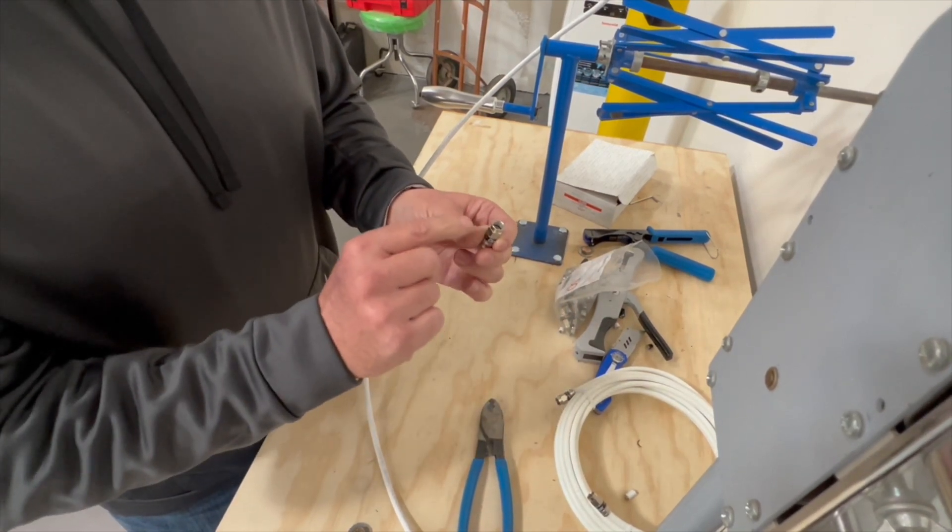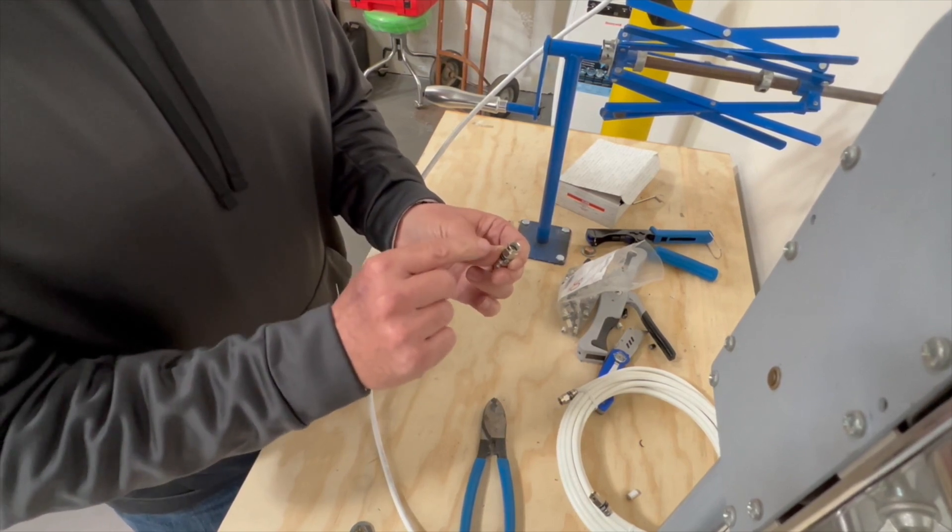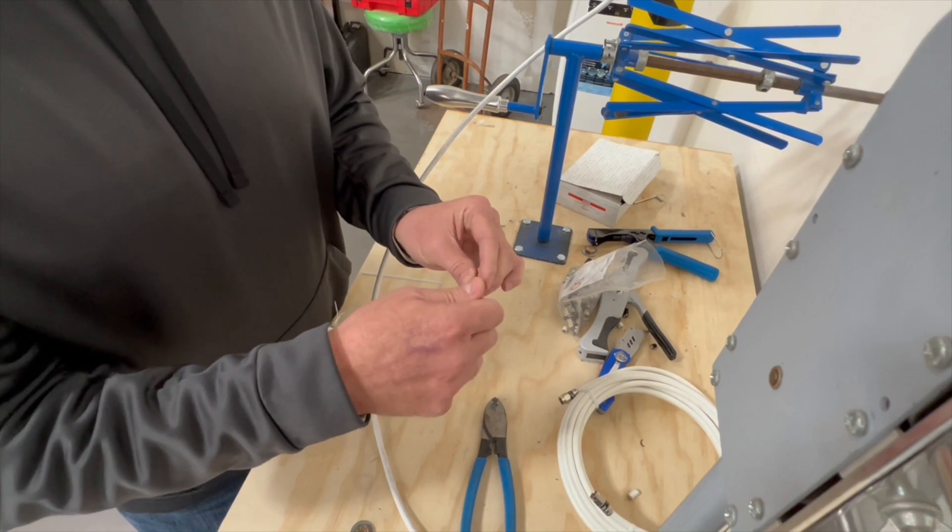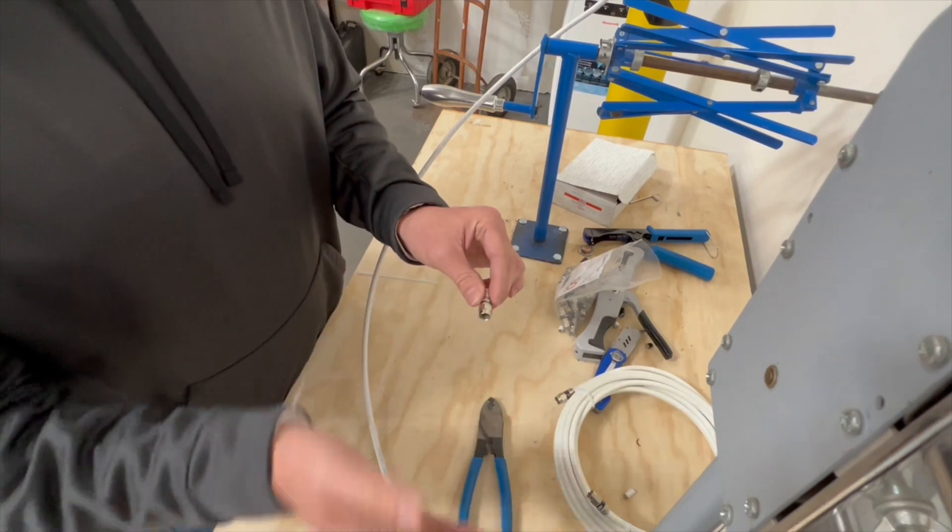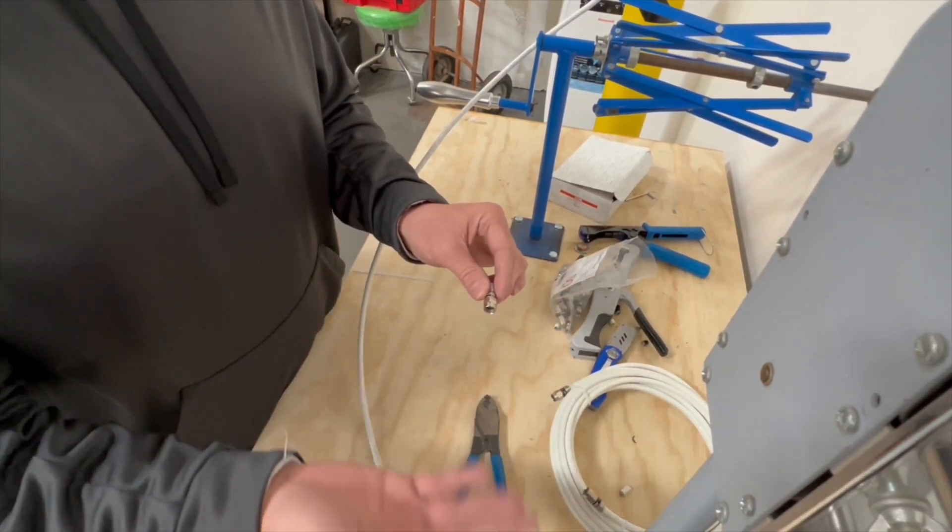Built inside this nut is a lock washer, and what that lock washer will do is basically retain torque. As you tighten this connector down, it will prevent itself from backing loose. With temperature cycles getting hot and cold, we notice that connectors will back themselves out, especially with vibration.